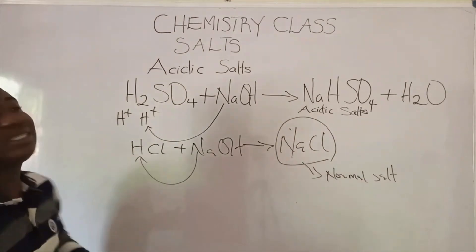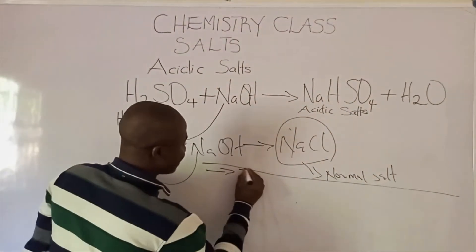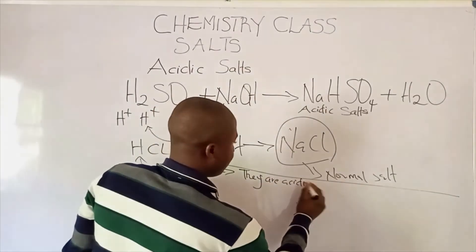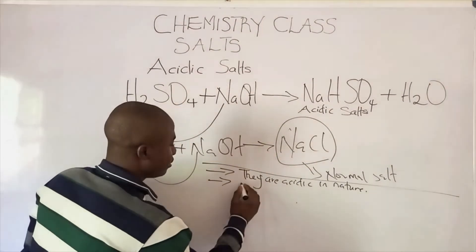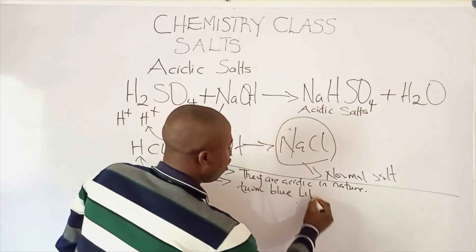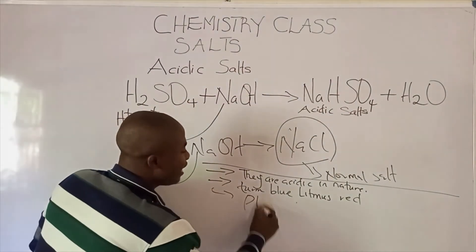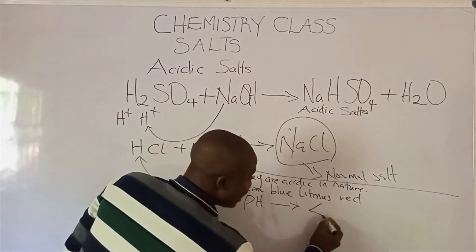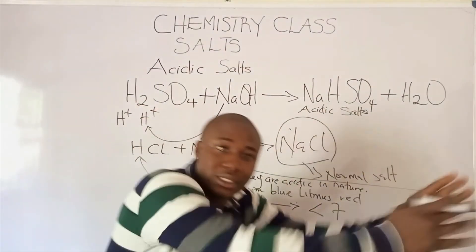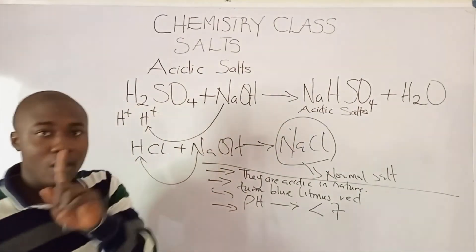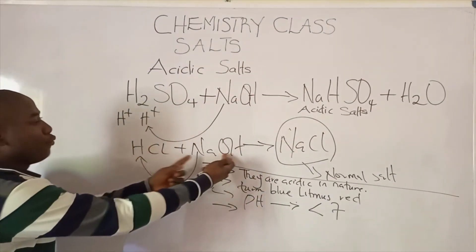Now let's quickly talk about some characteristics of acidic salts. First, they are acidic in nature, and they turn blue litmus red because they are acidic. The pH value of an acidic salt is less than seven, because they are acids formed from acid, so they share the same characteristics as acids. Lastly, acidic salts are not formed by a monobasic acid.